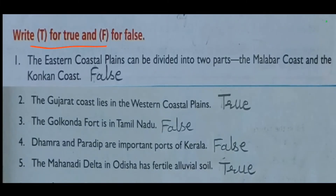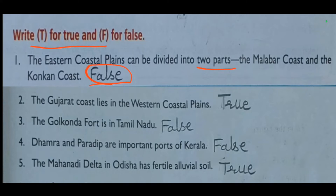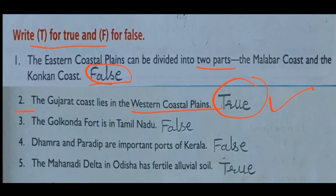Exercise C: Write T for True and F for False. First question: the eastern coastal plains can be divided into two parts — the Malabar coast and the Konkan coast. This is false, because the eastern coastal plains are divided into the Northern Sarkars and the Coromandel Coast. The Malabar coast and Konkan coast are parts of the western coastal plains. Question two: the Gujarat coast lies in the western coastal plains — this is true. The three parts of the western coastal plains are the Gujarat coast, the Malabar coast, and the Konkan coast.